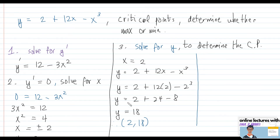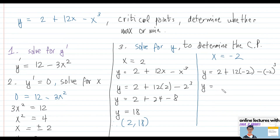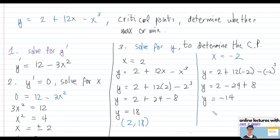At x = -2, y = 2 + 12(-2) - (-2)³ = 2 - 24 - (-8) = 2 - 24 + 8 = -14. So the second critical point is (-2, -14).